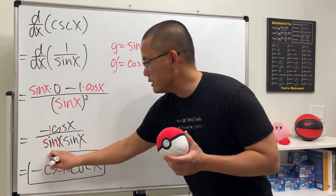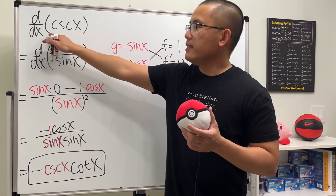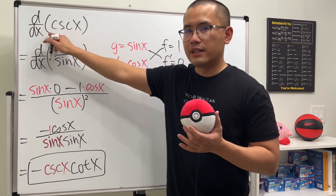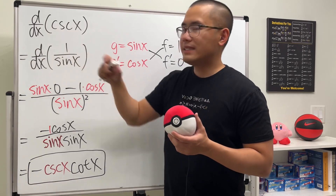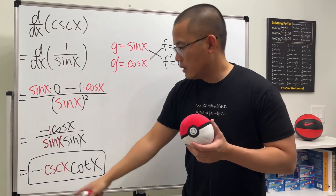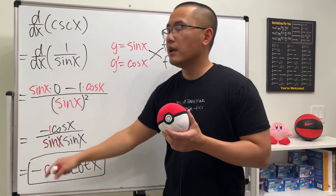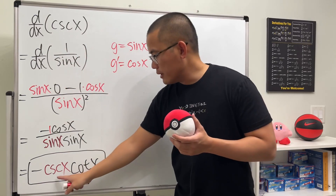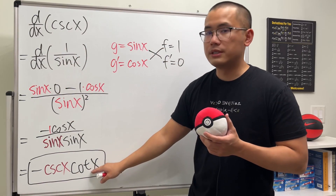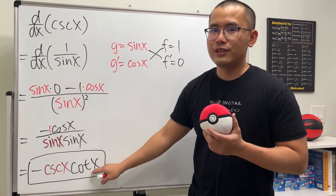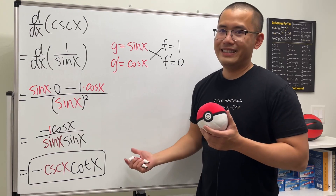One way to remember this is that when we are taking the derivative of the co-trig functions — the ones that have a 'co' — they will have a negative derivative. And for cosecant, you first repeat that cosecant, and then you pair that up with cotangent x.